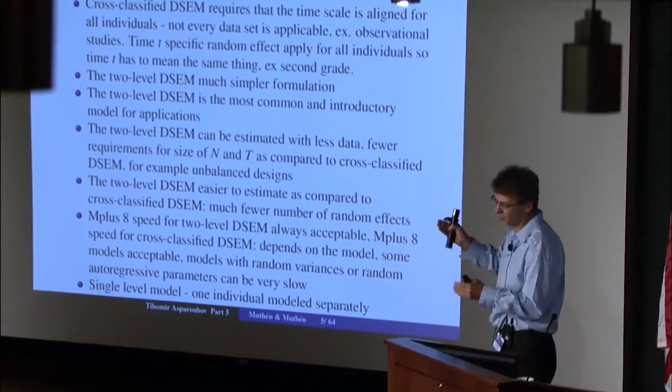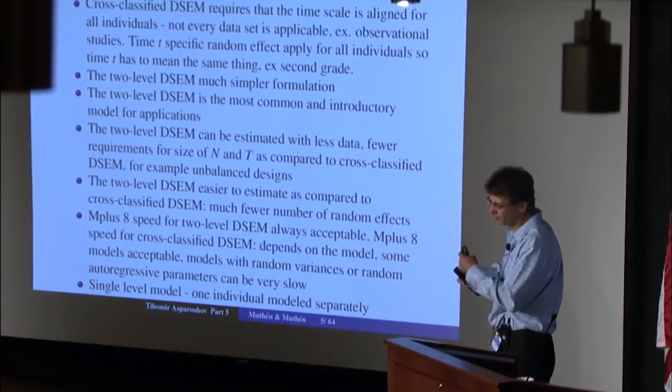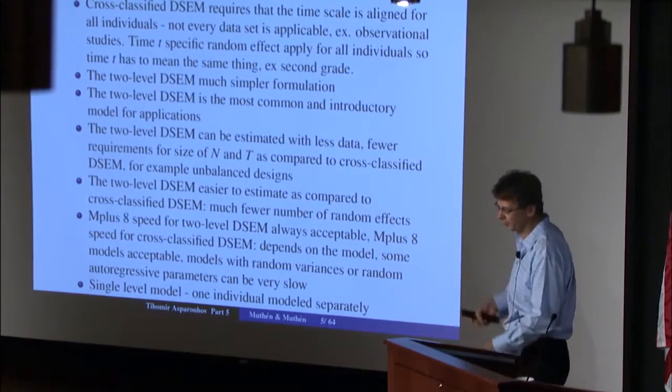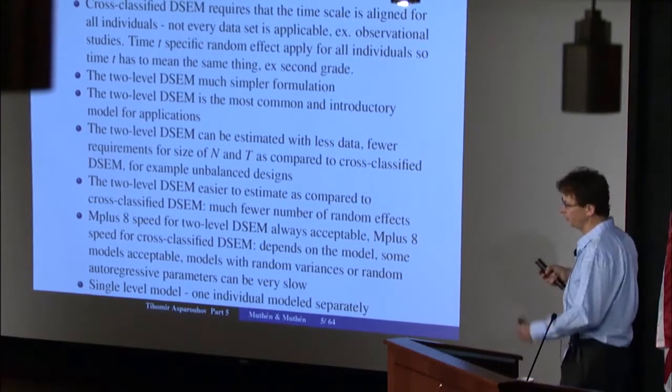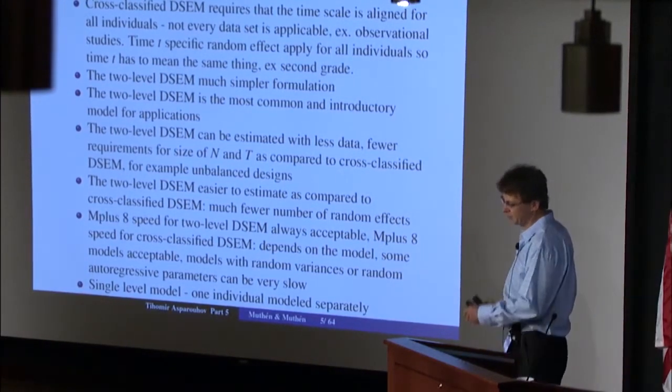Cross-classified models work better when you have multiple observations at each time point, so that you can actually estimate the random effects that are specific to that time.